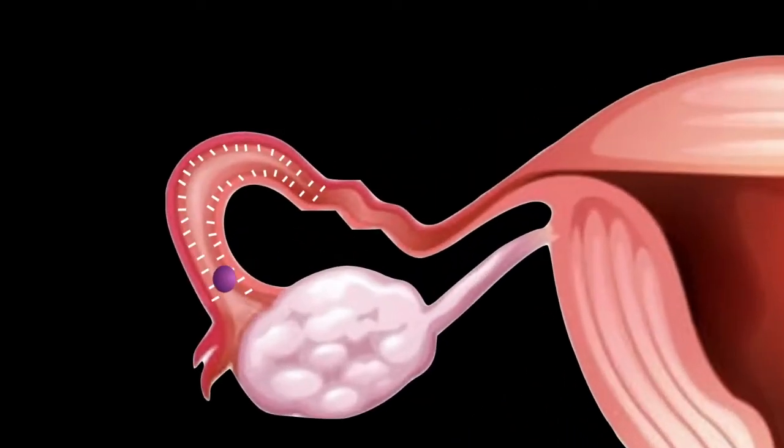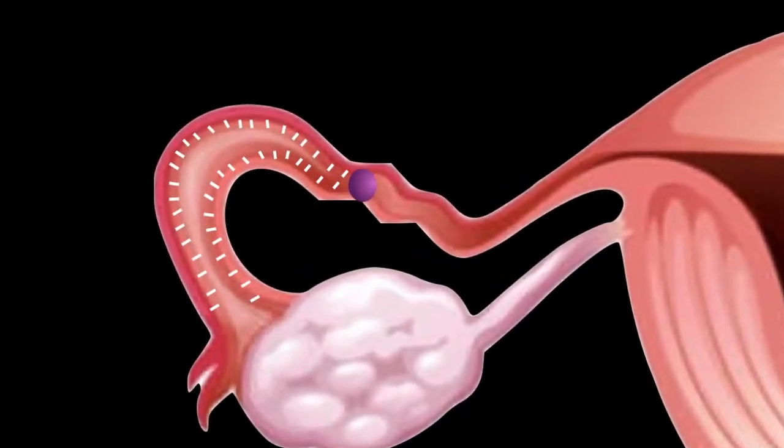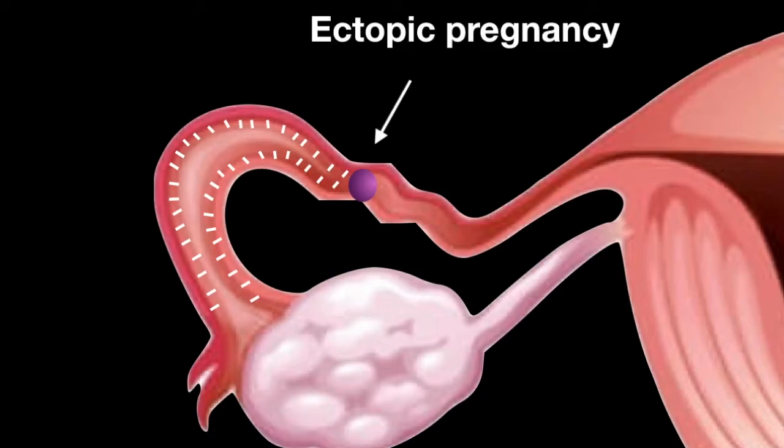The fallopian tubes contain thousands of cilia to transport the eggs to the uterus. With immotile cilia, individuals with Kartagener syndrome are at higher risk of ectopic pregnancies.